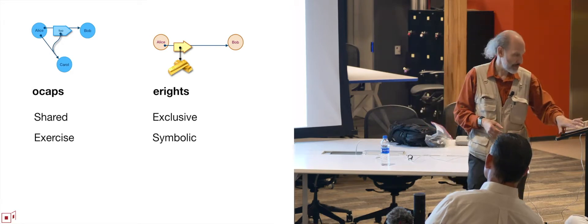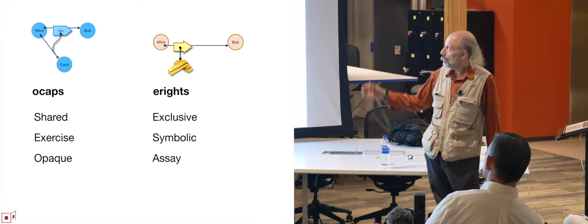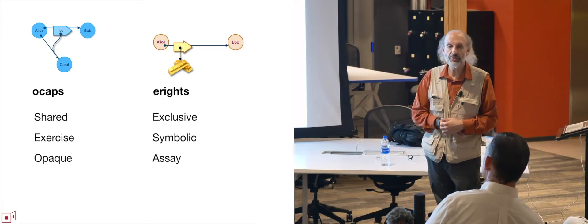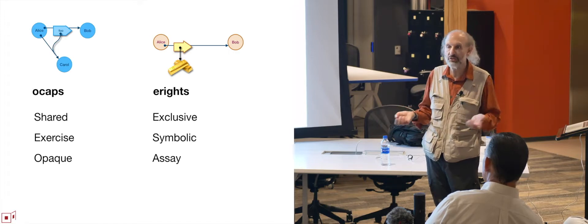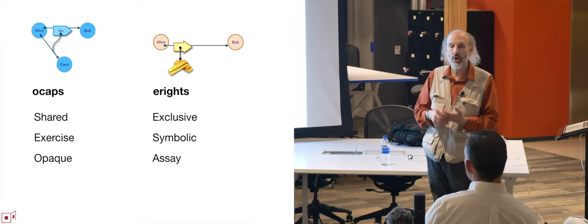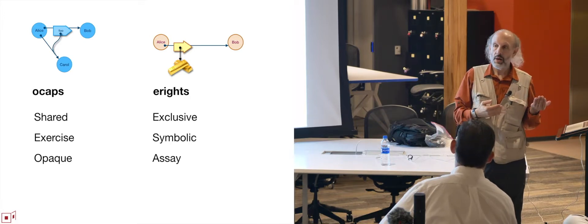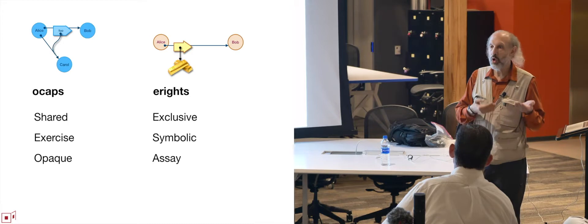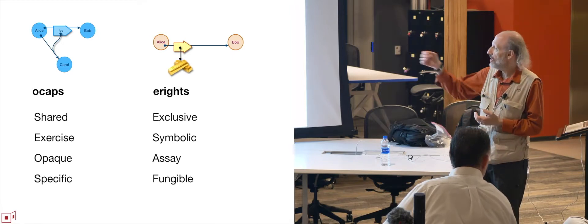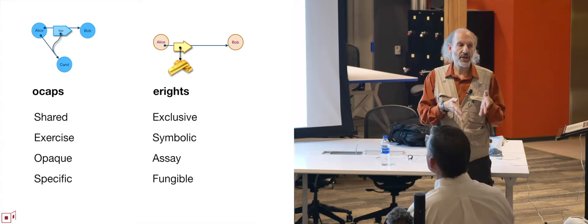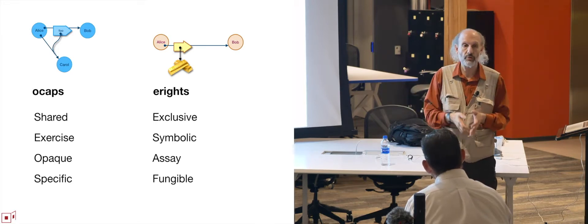There's exercise versus symbolic: objects are all about the exercise right — you exercise a right when you actually do something with it, like invoke the object provoking its behavior. Whereas money is just symbolic; it doesn't do anything and is only valuable because of the expectation that you can trade it to others who will in turn value it. By default an object is opaque: when Bob receives the Carol argument he's received some object, he can provoke its behavior, but he doesn't necessarily know what behavior to expect. Whereas on the right, Bob doesn't consider himself paid unless he knows what it is he's gotten. And there's specific versus fungible: each object is unique, whereas money is just a quantity — Bob doesn't care about one bar of gold versus another, just the total quantity.